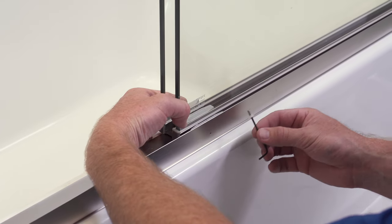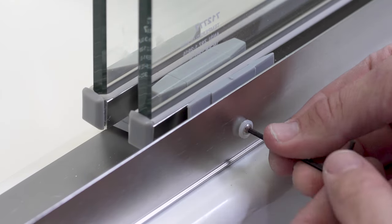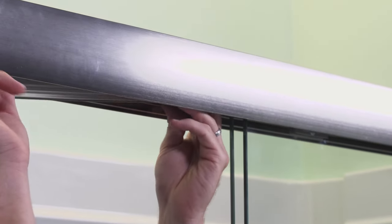Fix the door guide to the bottom track with the shoulder washer and screw provided. Also install the anti-jump guide.